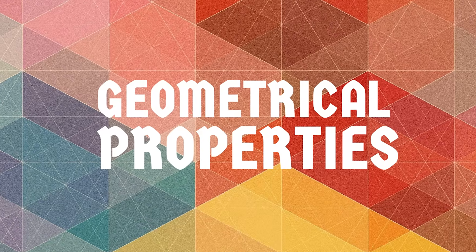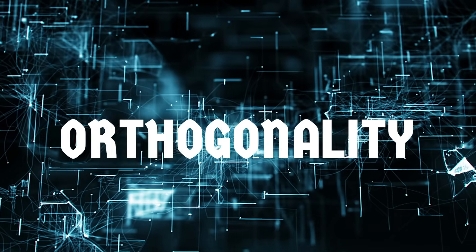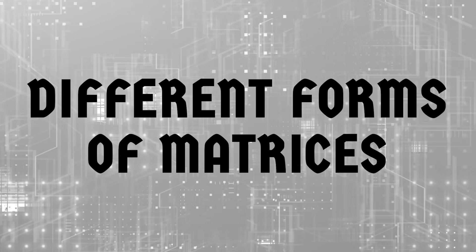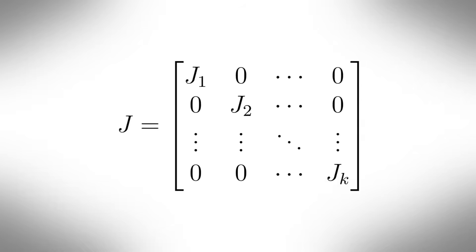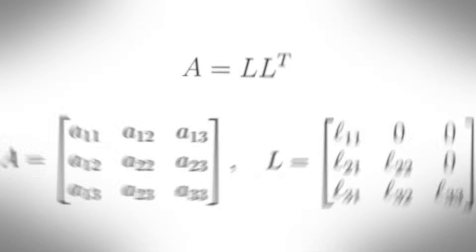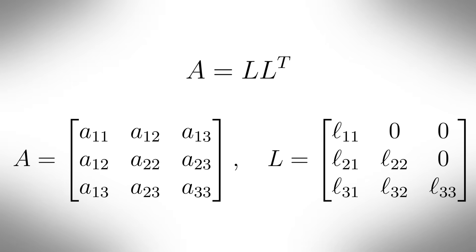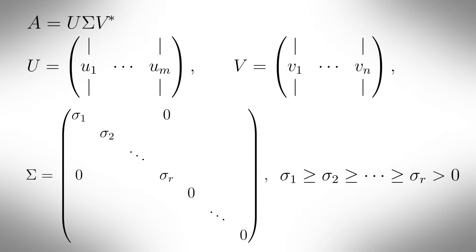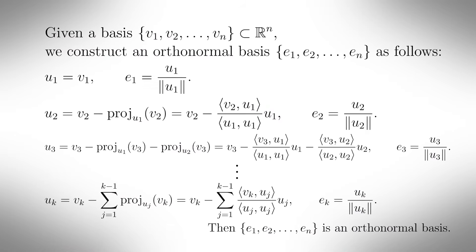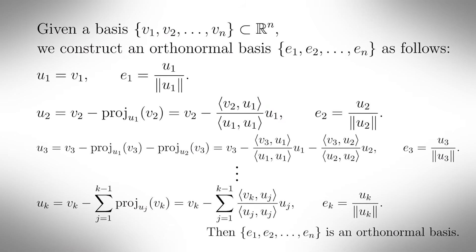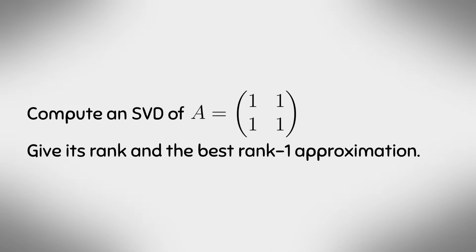Level 4, big fat ugly nerd. On this level you'll learn about the geometrical properties of linear algebra, like orthogonality, canonical decompositions, and different forms of matrices — like for example the Jordan canonical form, which looks like this, or the quadratic forms, and the Cholesky decomposition. Jordan form tells us how a matrix is built from eigenvalues, plus these things called Jordan blocks. The singular value decomposition, or SVD, generalizes diagonalization to any matrix, including the non-square ones. You can also take a basis vector and turn it into an orthonormal one using Gram-Schmidt orthonormalization. Here's a question to see if you've mastered level 4.